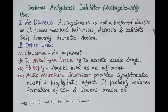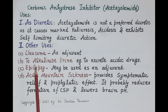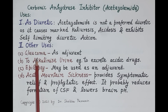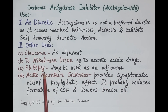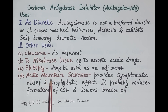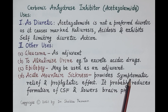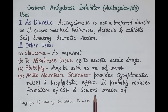To summarize uses of acetazolamide: it is not preferred as a primary diuretic due to marked kaliuresis, metabolic acidosis, and self-limiting action. Other uses include as an adjuvant in glaucoma, to promote excretion of certain acidic drugs by alkalinizing the urine, as an adjuvant in epilepsy, and in acute mountain sickness — where it provides symptomatic relief and prophylaxis, likely by reducing formation of cerebrospinal fluid and lowering brain pH.